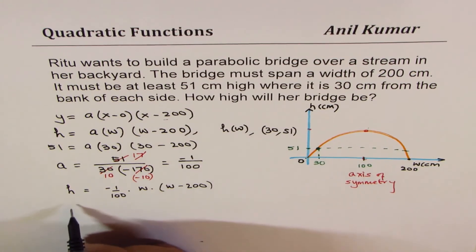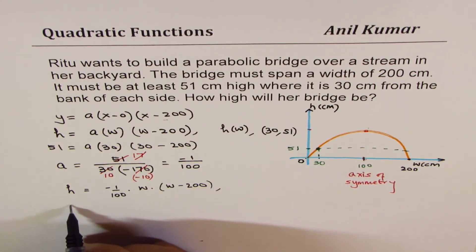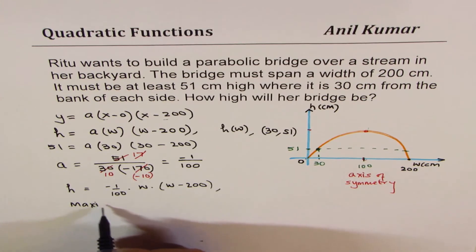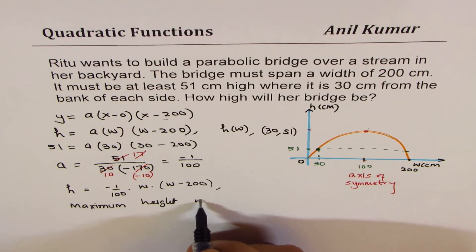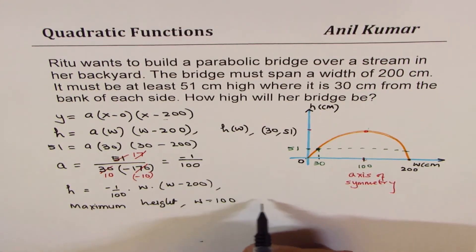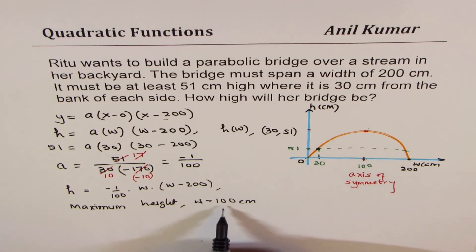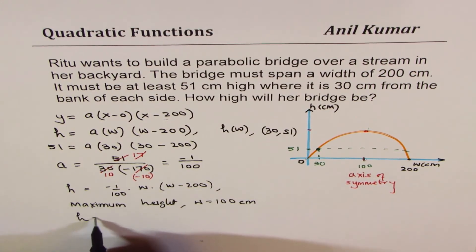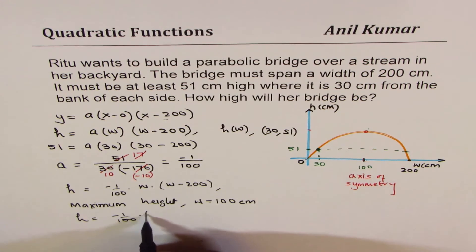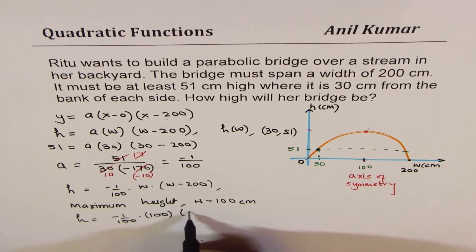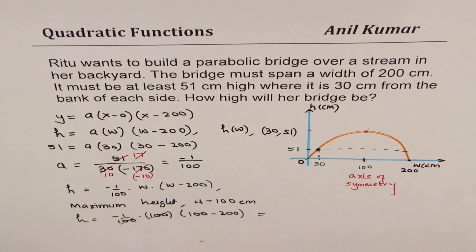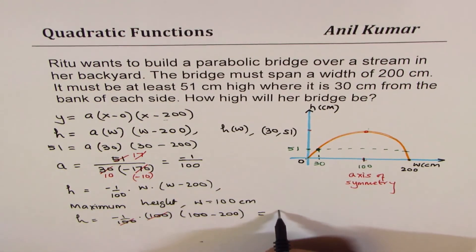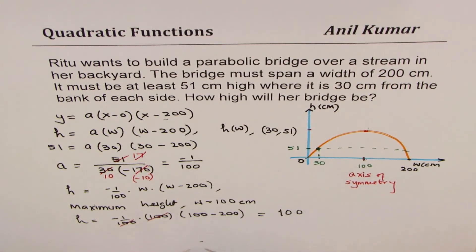The question is how high will the bridge be? Maximum height will be when width is equal to 100, because that is the axis of symmetry. Substituting this value we get height equals to minus 1 over 100 times 100 times 100 minus 200. And without calculator you can actually solve this question, and that minus minus becomes positive and we get height as 100.